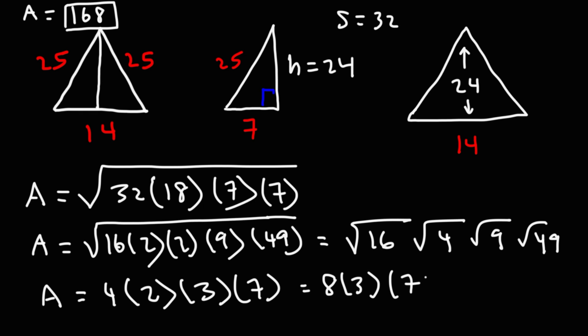So, 4 times 2 is 8. And then, 8 times 3 is 24. 24 times 7. That's going to give us the same answer of 168. So, we know we have the right answer.